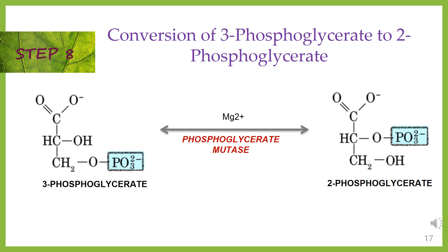Step 8: conversion of 3-phosphoglycerate to 2-phosphoglycerate. With the enzyme phosphoglyceromutase, the phosphate of both phosphoglycerate molecules is relocated from the third to the second carbon to yield two molecules of 2-phosphoglycerate.